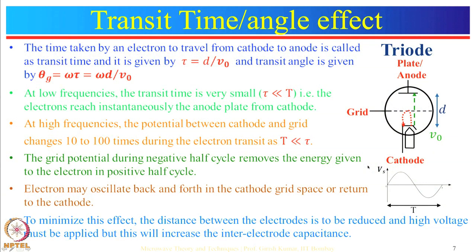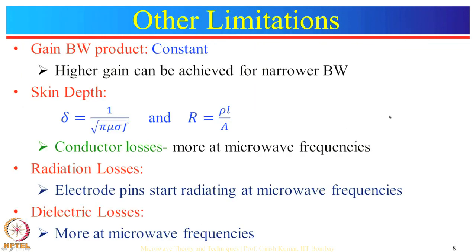Because of this process, electrons may oscillate back and forth in the cathode-grid space or return back to the cathode. To minimize this effect, the distance between electrodes should be reduced and high voltages should be applied. However, reducing electrode spacing increases inter-electrode capacitance. The next limitation is gain-bandwidth product limitation.